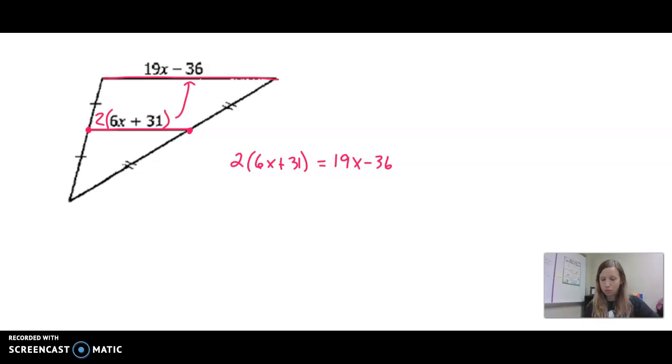So if you recall from Algebra 1, we have to distribute that 2. 2 times 6x is 12x. 2 times 31 is 62. The other side for the moment is remaining the same.